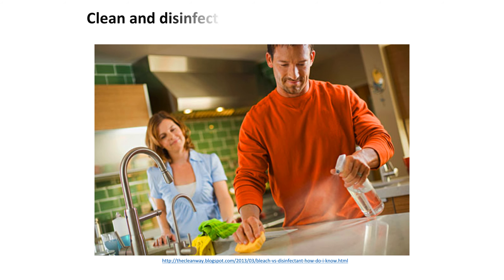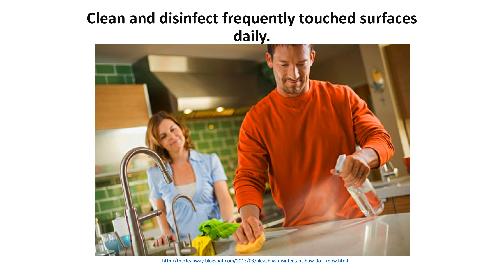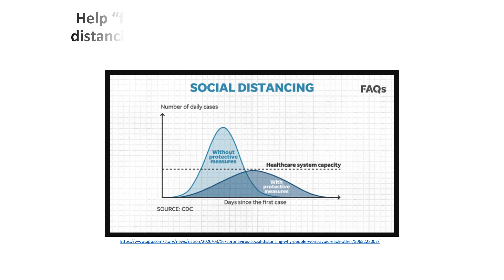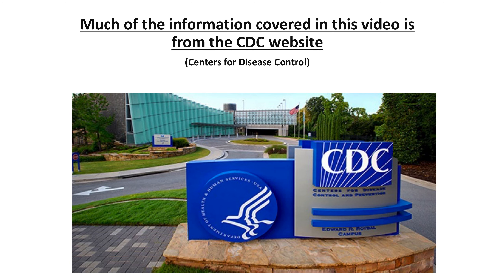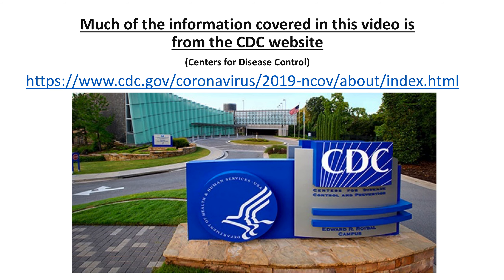Clean and disinfect frequently touched surfaces every day. This includes tables, doorknobs, light switches, countertops, handles, desks, phones, keyboards, toilets, faucets, and sinks. Help flatten the curve of spreading by doing these things. The slower the COVID-19 virus spreads, the more time is given to healthcare workers to respond, and then the better the outcomes will be for everyone. Much of the information covered so far came from the Centers for Disease Control and Prevention website.